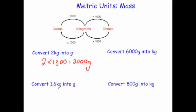Convert 1.6 kilograms into grams. To go from kilograms to grams, you times by a thousand. So you do 1.6 times a thousand. And when you do 1.6 times a thousand, you get 1,600 grams.